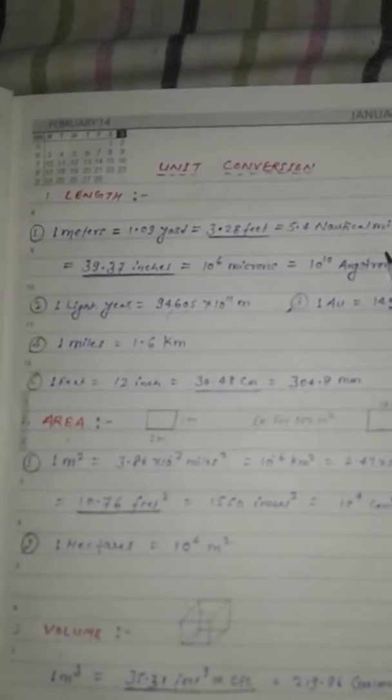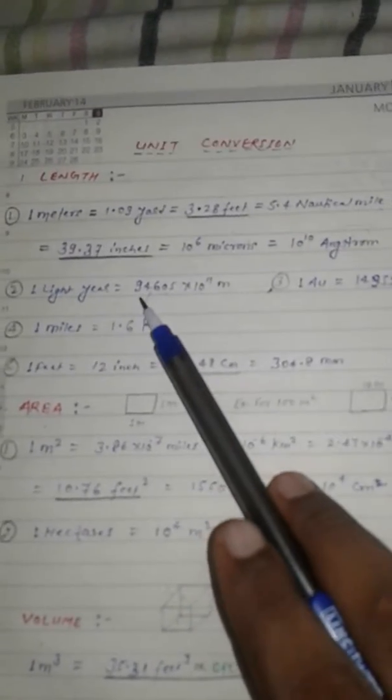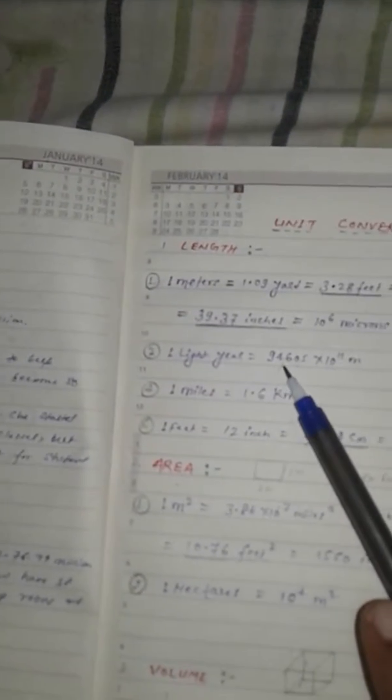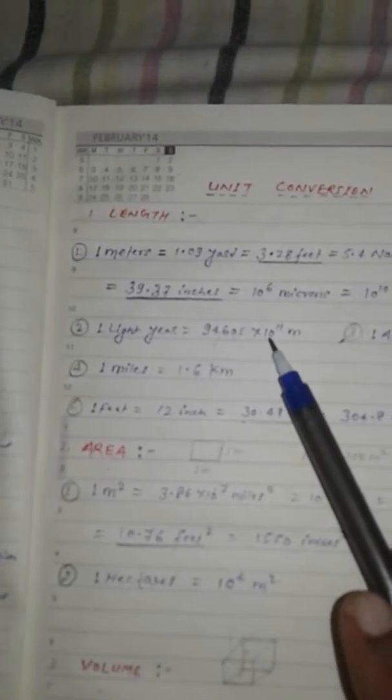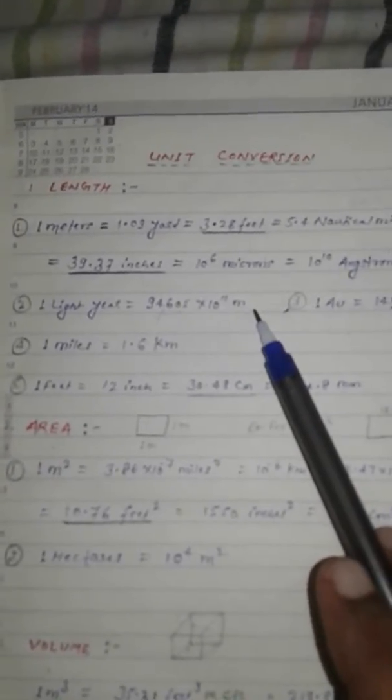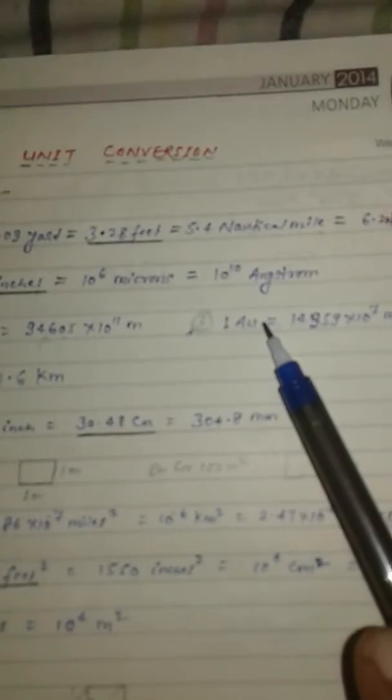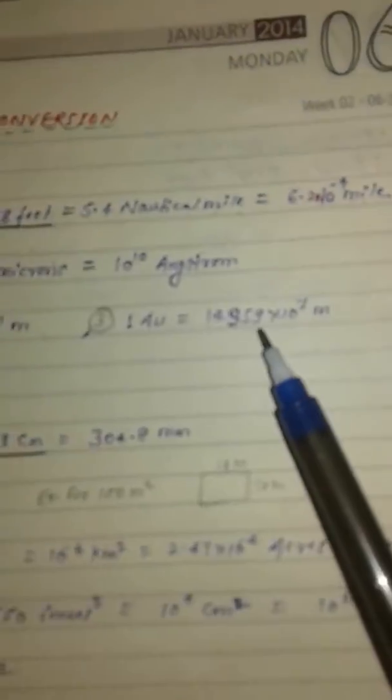Second one is light year, which is equal to 9.4605 x 10 to the power 11 meters. Next is one astronomical unit, which is equal to 1.4959 x 10 to the power 7 meters.